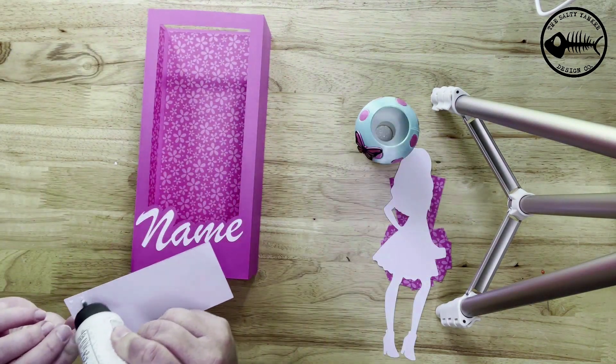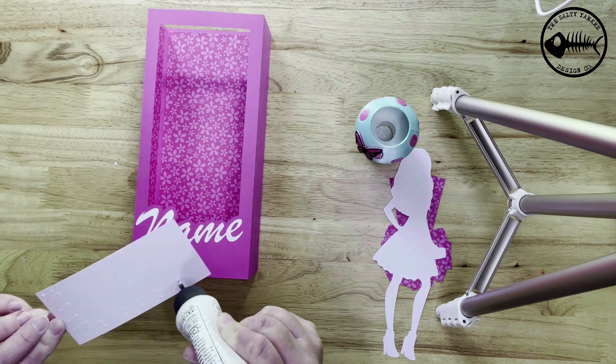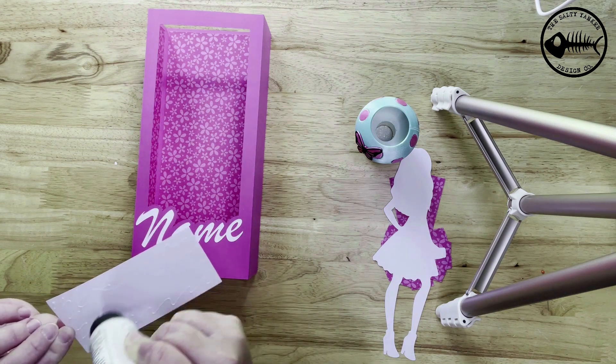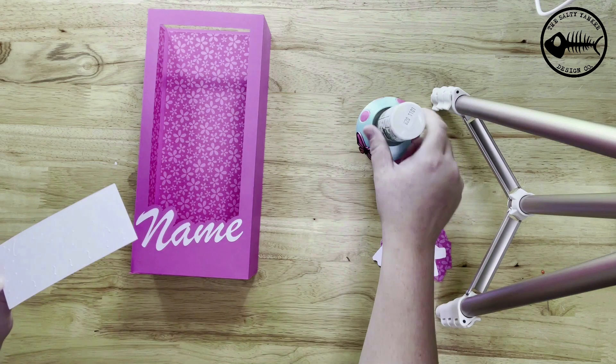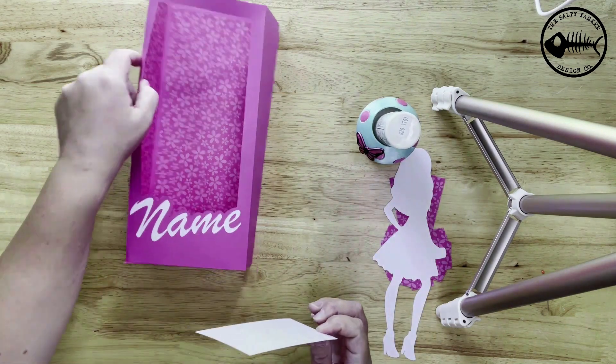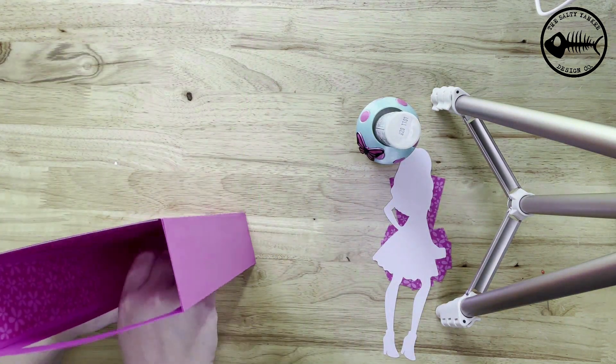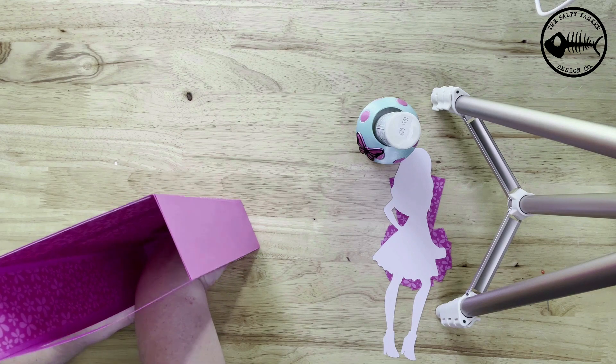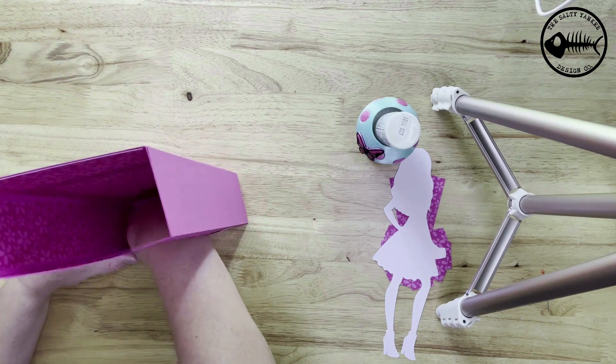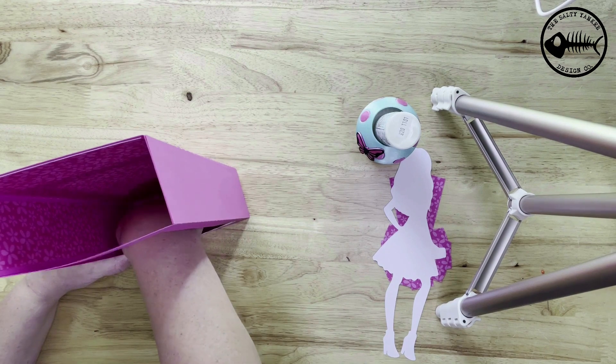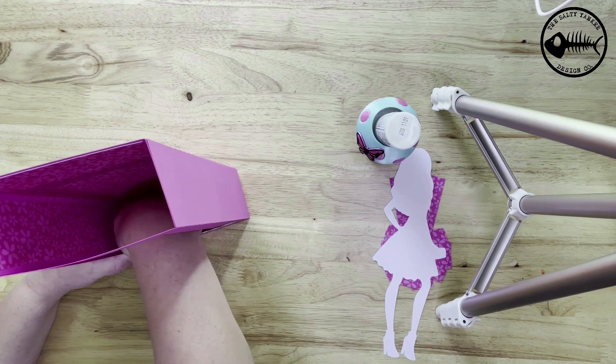And now that bottom liner can go in. You could have done it actually earlier when it was flat and it doesn't really matter when you put it in. This would probably be hard if you had acetate in, so I would say to glue the liners while it's still flat and not a 3D box yet.